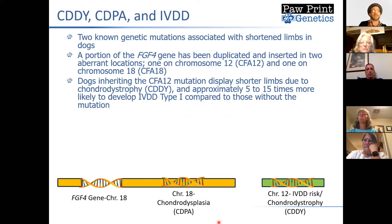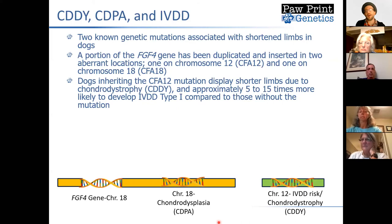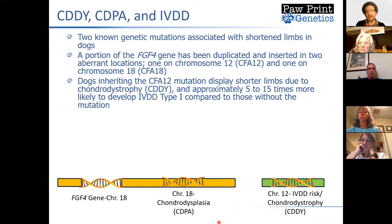Dogs that have the chromosome 12 mutation will be expected to have shorter limbs to some degree. Dogs that only have one copy of one of these mutations quite commonly will not show an extreme shortening of limbs, so some people may not even notice a huge change. Dogs with this mutation are believed to have about a 5 to 15 times greater chance of developing type 1 intervertebral disc disease compared to dogs that don't have the mutation at all.